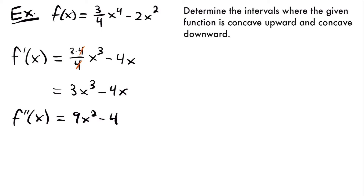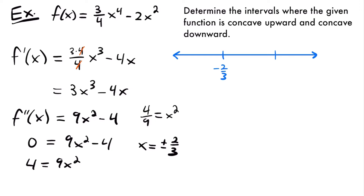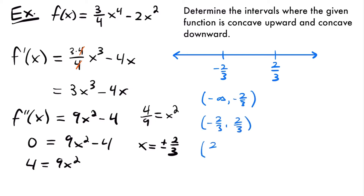Now we can set the second derivative equal to 0 to find our potential inflection points. So 0 equals 9x squared minus 4. Adding 4 to both sides gives 4 equals 9x squared. Dividing both sides by 9 gives 4 ninths equals x squared. Taking the square root of both sides, the square root of 4 is 2 and the square root of 9 is 3, so x is equal to plus or minus 2 thirds. Drawing a number line, we label negative 2 thirds and positive 2 thirds, giving us three intervals: negative infinity to negative 2 thirds, negative 2 thirds to positive 2 thirds, and positive 2 thirds to positive infinity.